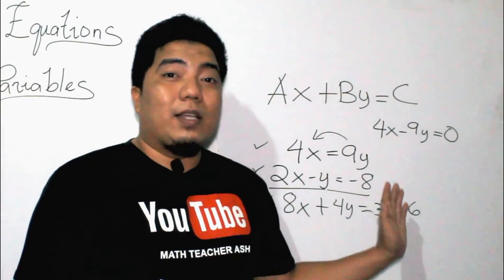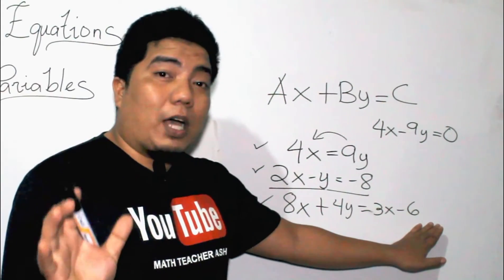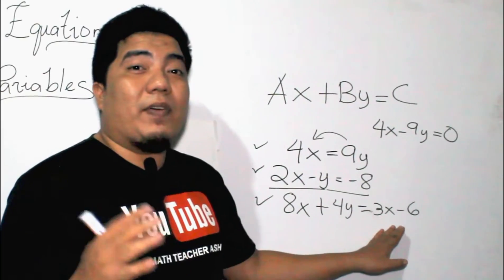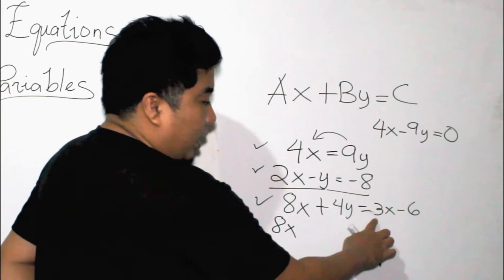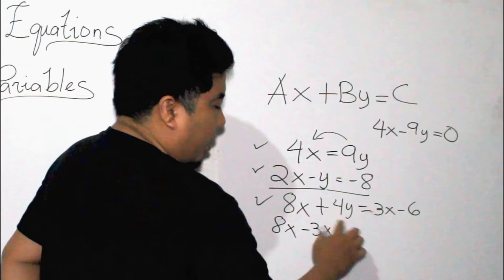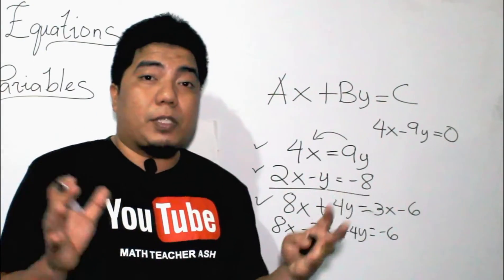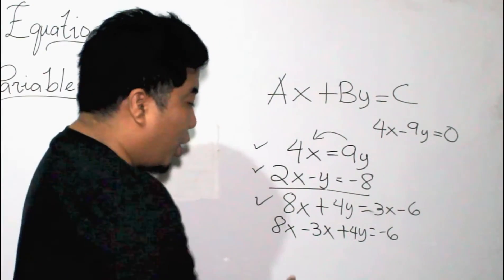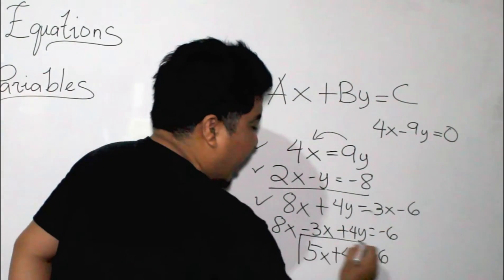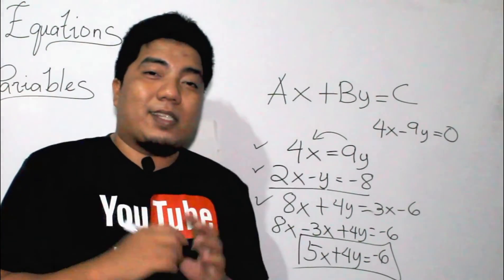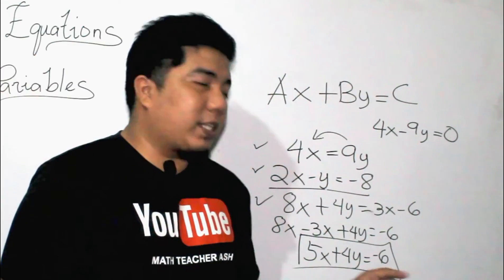Now let us go to the third example: 8x plus 4y is equal to 3x minus 6. We already have our constant term on the right side, so that is in place. But we have an x term on the right side as well, so we transpose 3x to the other side, giving us 8x minus 3x plus 4y is equal to negative 6. Combining like terms, 8 minus 3 gives us 5x plus 4y is equal to negative 6. This is already in its standard form. a is 5, b is positive 4, and c is negative 6.